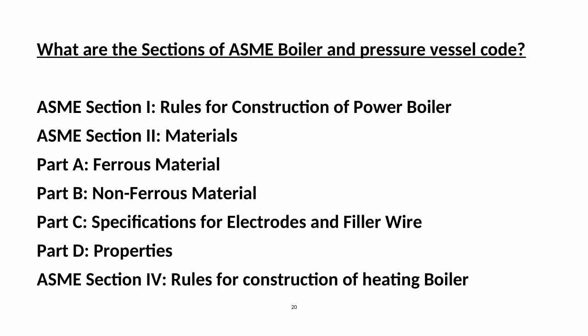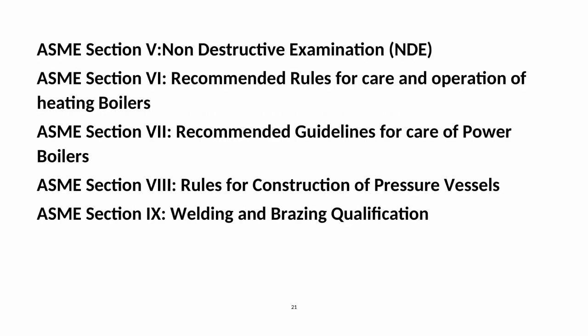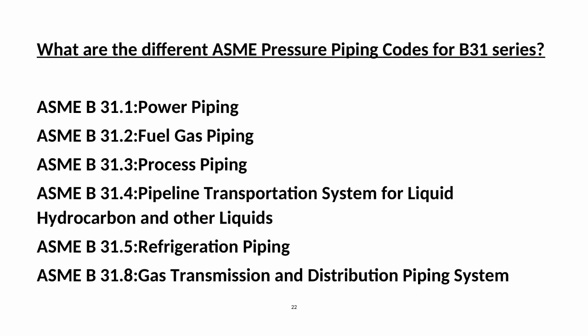ASME Section I — Rules for Construction of Power Boiler. ASME Section II — Materials: Part A — Ferrous Material; Part B — Non-Ferrous Material; Part C — Specifications for Electrodes and Filler Wire; Part D — Properties. ASME Section IV — Rules for Construction of Heating Boiler. ASME Section V — Non-Destructive Examination (NDE). ASME Section VI — Recommended Rules for Care and Operation of Heating Boilers. ASME Section VII — Recommended Guidelines for Care of Power Boilers. ASME Section VIII — Rules for Construction of Pressure Vessels. ASME Section IX — Welding and Brazing Qualification.